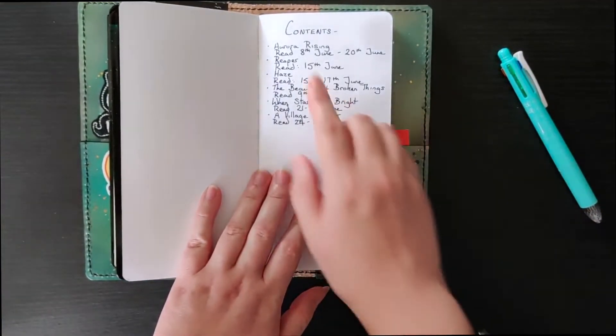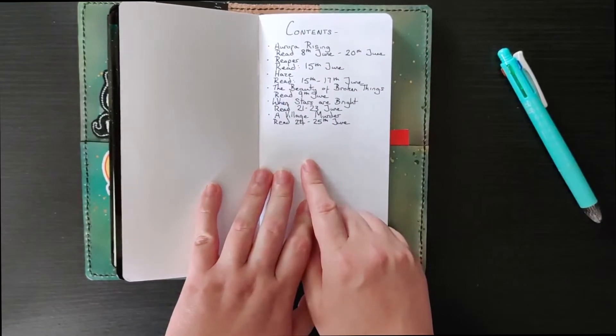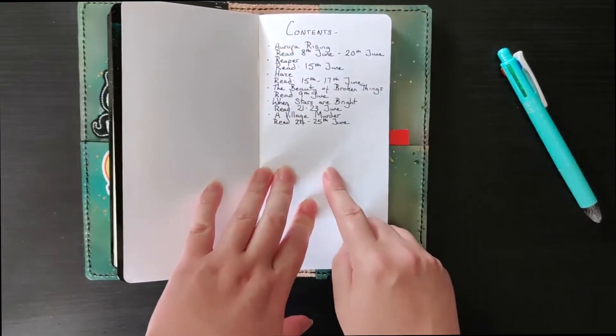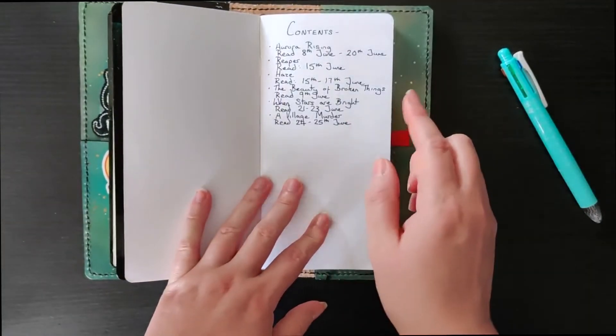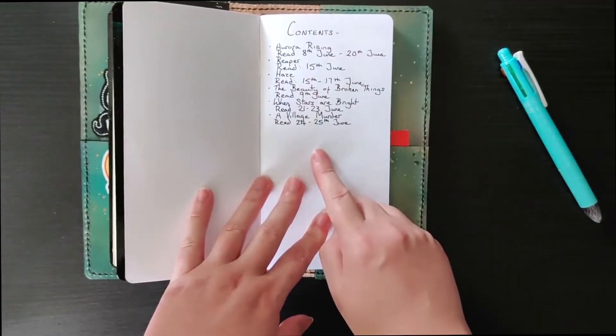So then my first page in here is just contents just so that in future because I'm sure I'm going to fill this up soon and so when I come back to it I can just quickly see what's in this book.